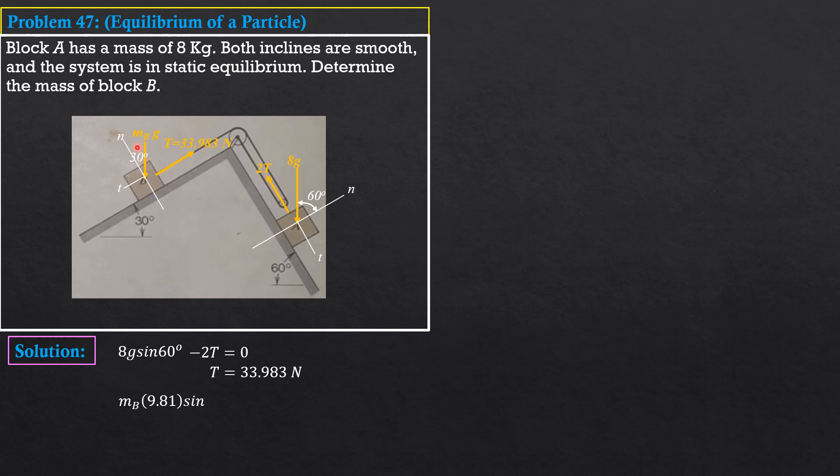So, MB times 9.81 sine 30 minus T, which is 33.983 equals 0. So, from here, we can solve MB. MB is equal to 6.928 kilograms.